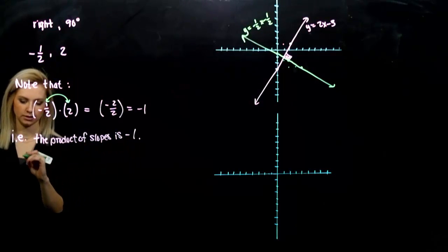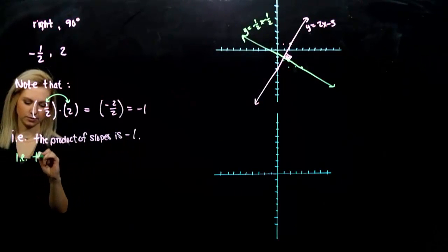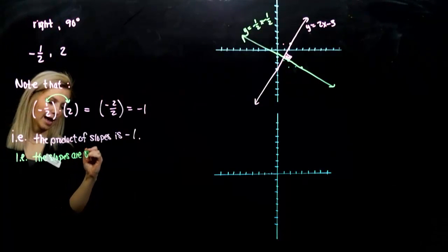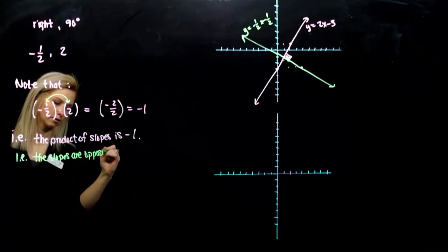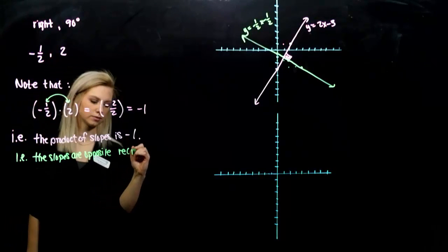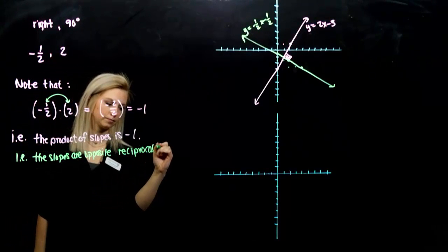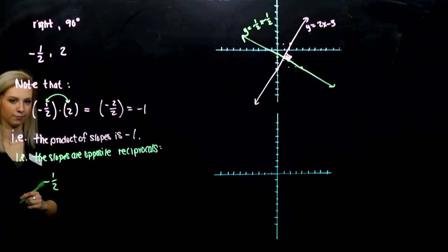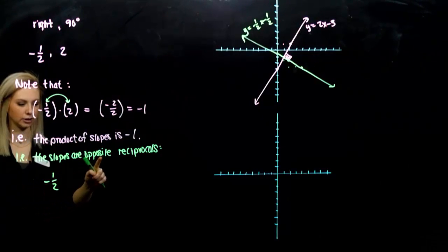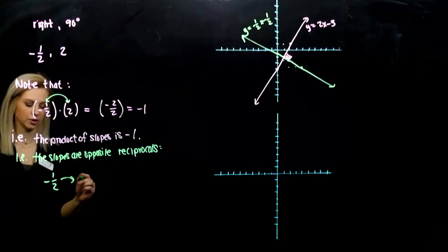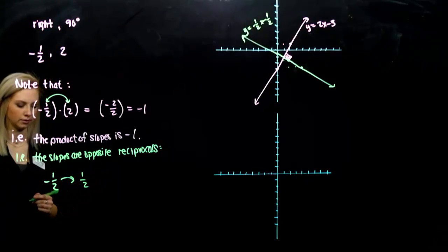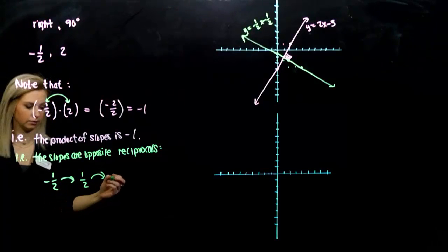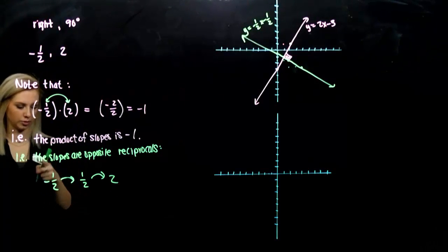So another way to state this is the slopes are opposite reciprocals. Because if I took minus one half, okay, and I negated it, I looked for its opposite, that'll turn me into one half. And if I look at the reciprocal of the opposite, it gets me to the other slope that I started with.